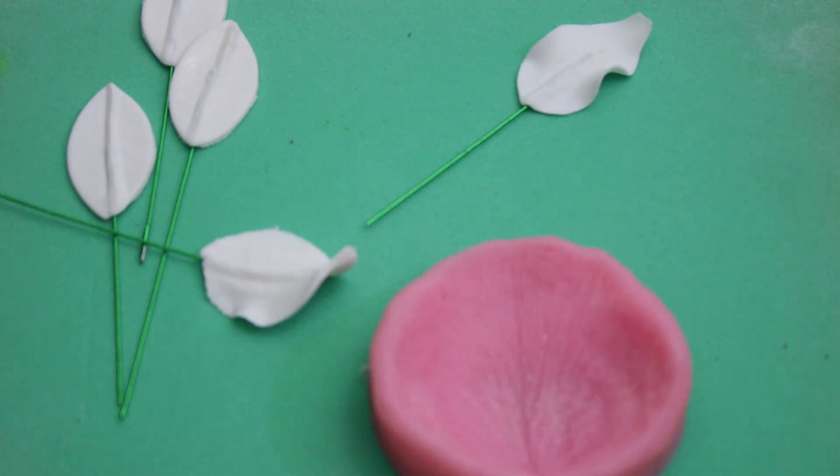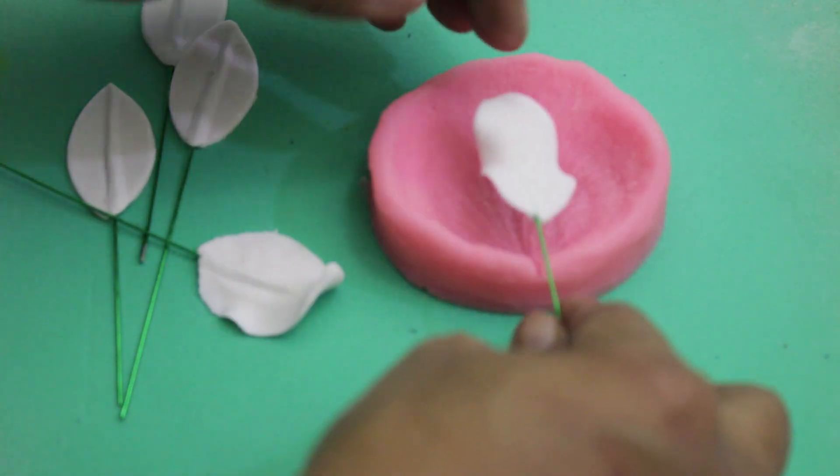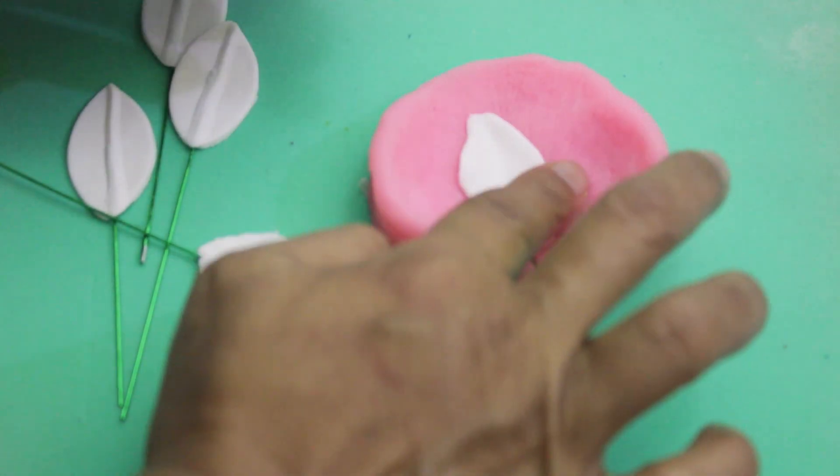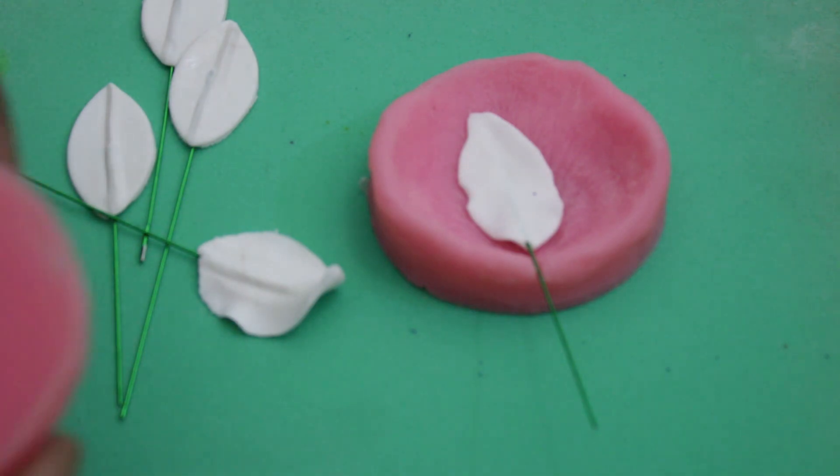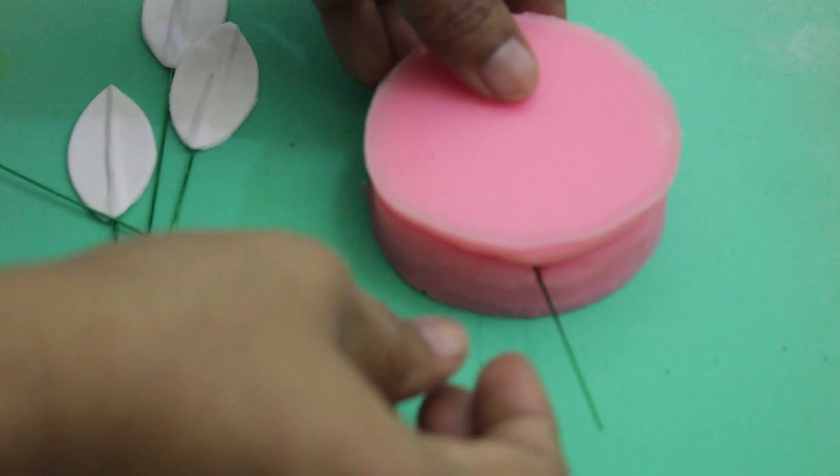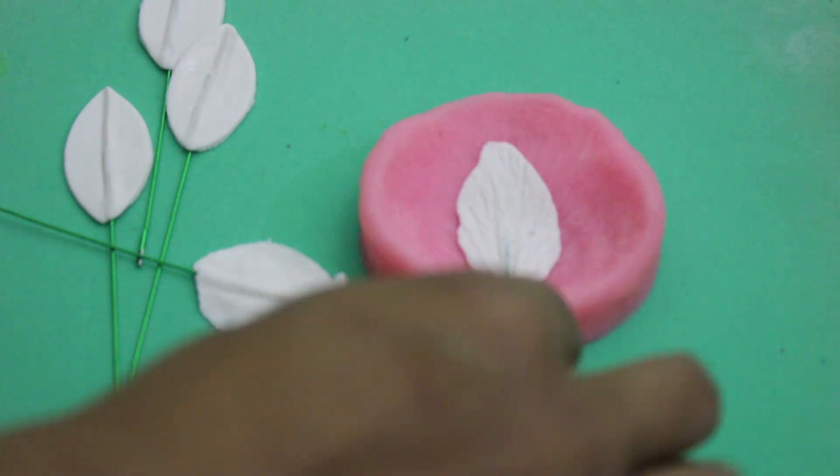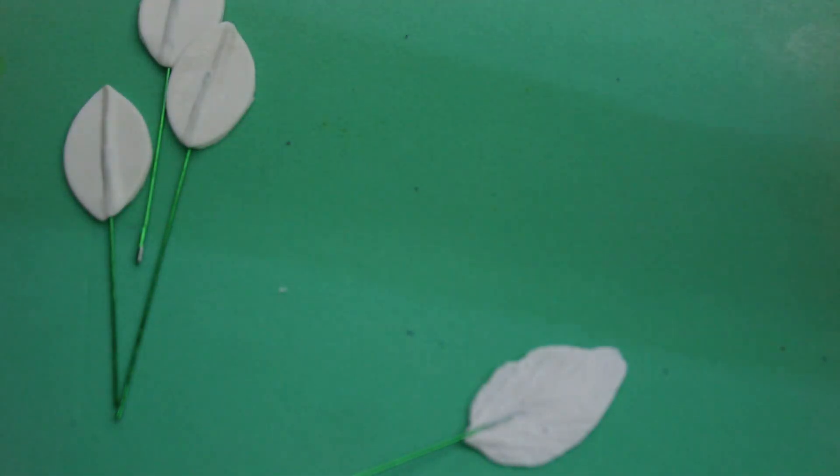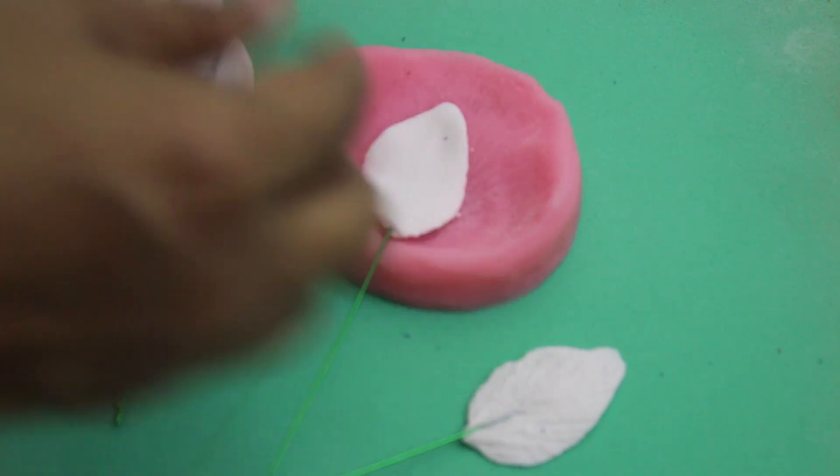I'm using this veiner. Place it here like this and press a little bit. Then with another one, press it. Here is the petal for my flower. I'm making the same way. Place it here and then press it.